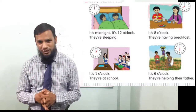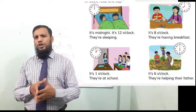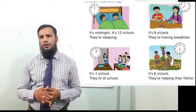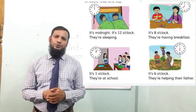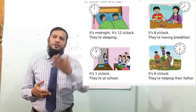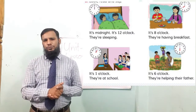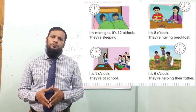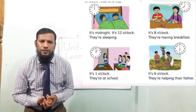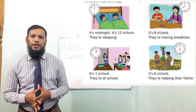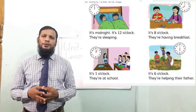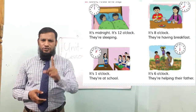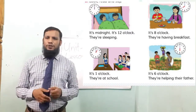In picture three, we can see it's one o'clock. They are at school. And in picture four, it's six o'clock. They are helping their father in the field. The hour hand is striking at six and the minute hand is striking at twelve, so it is six o'clock.